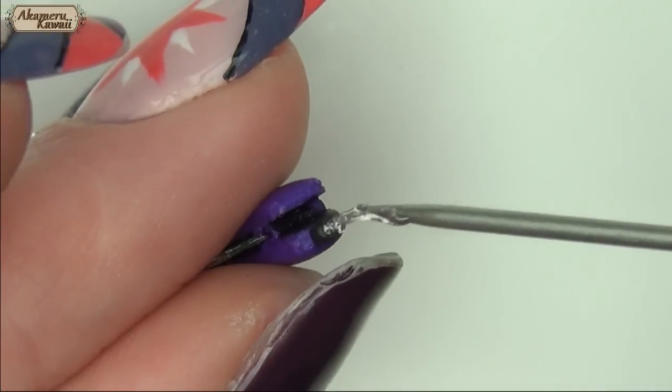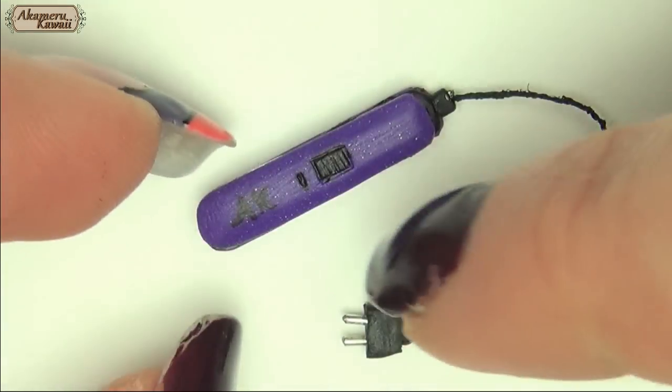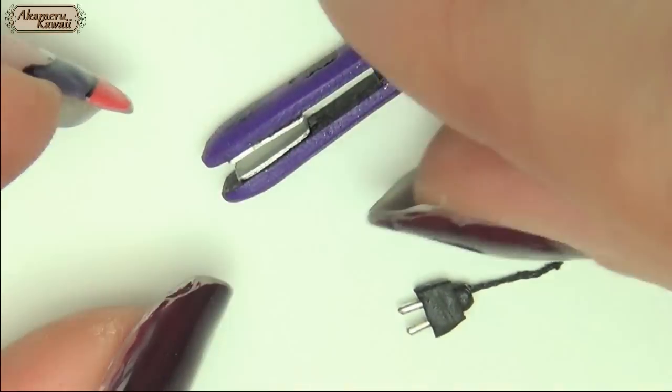Finally, glue on the cord. I use some thin thread covered in black paint. Glaze to protect the paint, and the project is complete.